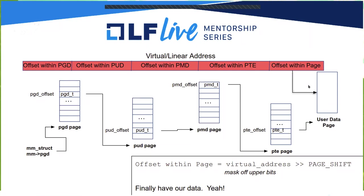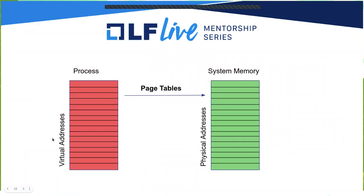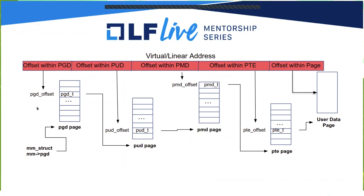As you can imagine, that's quite a bit of work to traverse from a virtual address to system memory — think about all of those calculations needed, traversing the entire page tables, getting the PGD offset, the PUD, and all of that. That's quite a bit of work, and it's actually required every time we make a memory access to figure out where that physical page is within the system.